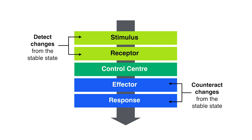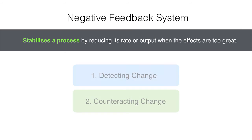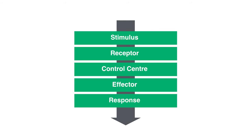Although the control center is not directly involved in detecting or counteracting change, it receives the message from the receptors and tells the effectors what to do. A key term to understand about homeostasis is that it is a type of negative feedback system. A negative feedback system stabilizes a process by reducing its rate or output when the effects are too great. Homeostasis adheres to this definition by detecting and counteracting changes from the stable state. With a process like body temperature, homeostasis stabilizes this by reducing or increasing body temperature whenever the effects are too great.